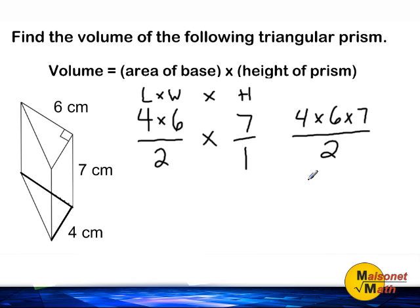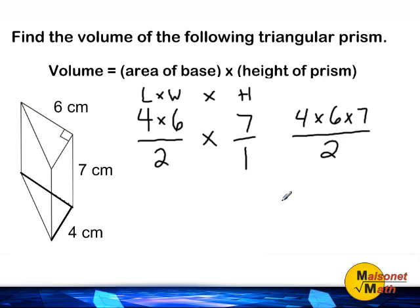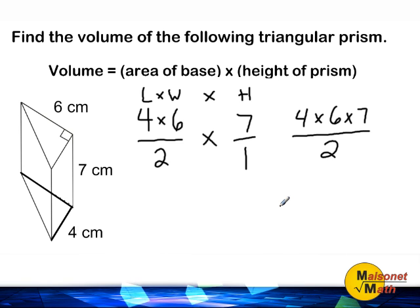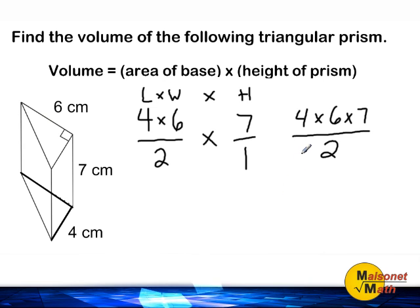The volume of a triangular prism is always half that of a rectangular prism. One way to remember the formula is to pretend you start with a rectangular prism: multiply the length times the width times the height and then divide that answer by 2. This is the same as finding the area of the triangular base and multiplying it by the height of the prism.